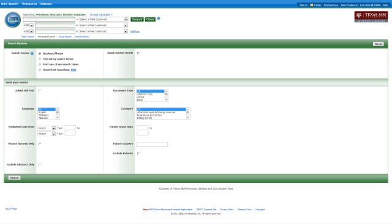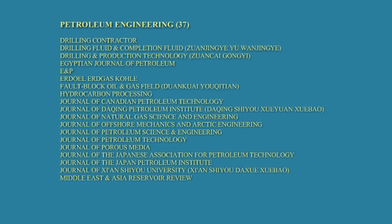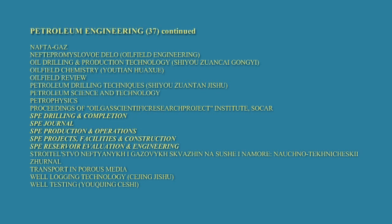When you search this database, you are searching the contents of over 320 U.S. and international journals and publications that directly relate to petroleum engineering to some extent. Here is a list of the subject areas covered in Petroleum Abstracts with the number of journals in each. First is a list of 37 journals in the area of petroleum engineering. You will notice quite a number of international journals here, along with some familiar ones such as the six peer-reviewed SPE journals. Not listed but included in this database are the past SPE journals as well.